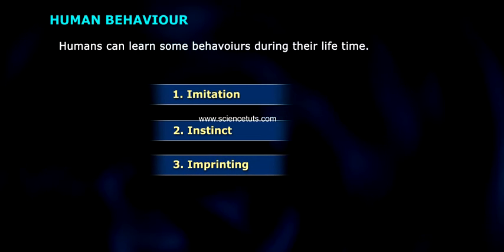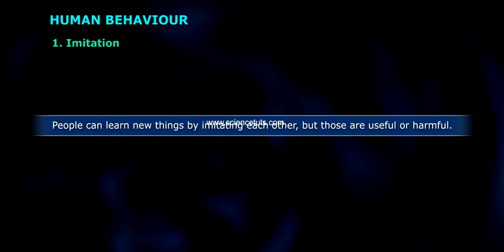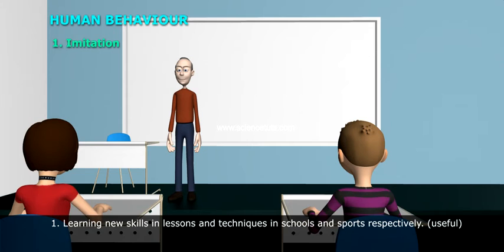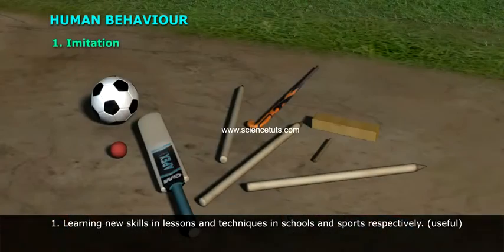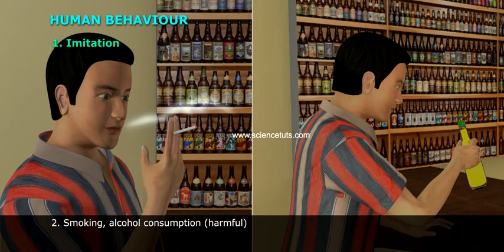Imitation: people can learn new things by imitating each other, which can be useful or harmful. Example one — learning new skills, lessons, and techniques in schools and sports respectively — useful. Example two — smoking and alcohol consumption — harmful.